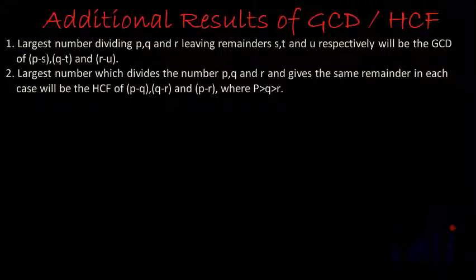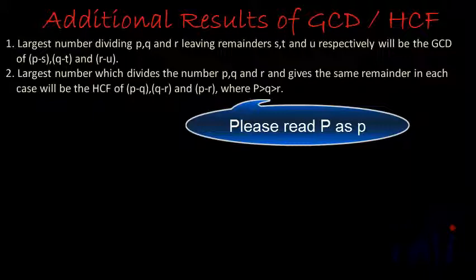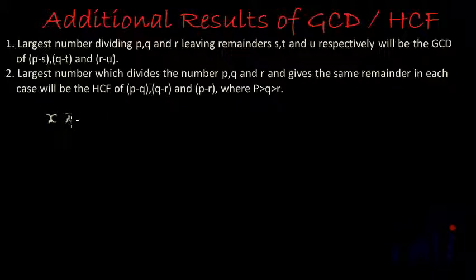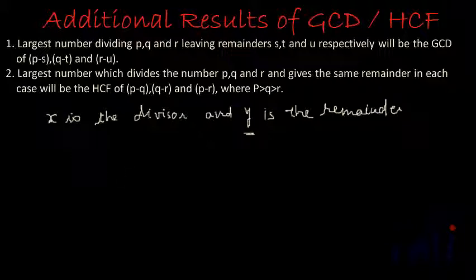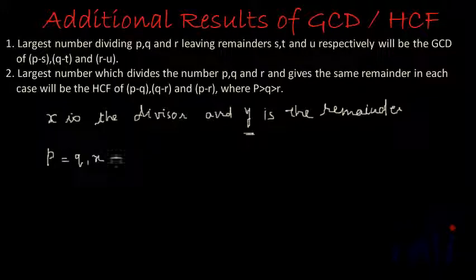The second result: the largest number which divides P, Q, and R and gives the same remainder in each case will be the HCF of P minus Q, Q minus R, and P minus R, where P is greater than Q which is greater than R. Let's assume that X is the divisor and Y is the remainder, because every time the remainder is the same. When X divides P, Q1 times, it leaves remainder Y.